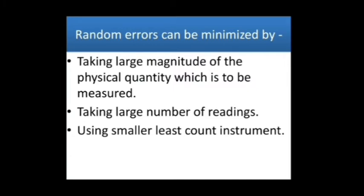The same person may get different readings because of human limitations. Random errors can be minimized by taking a large magnitude of the physical quantity to be measured, taking a large number of readings, and using smaller least count instruments.